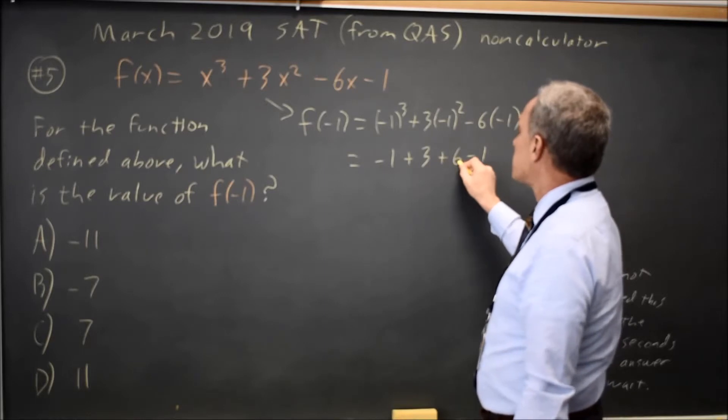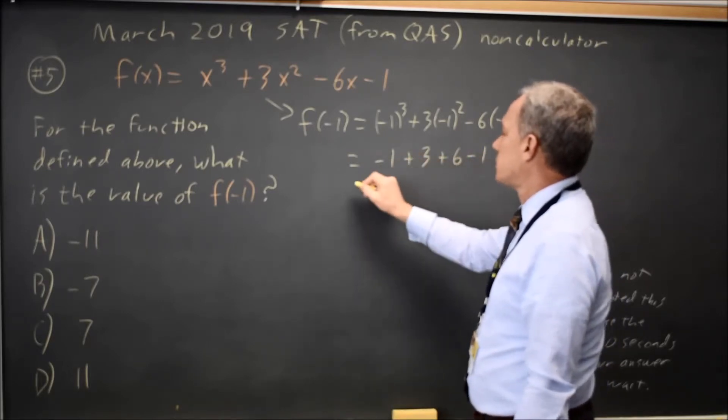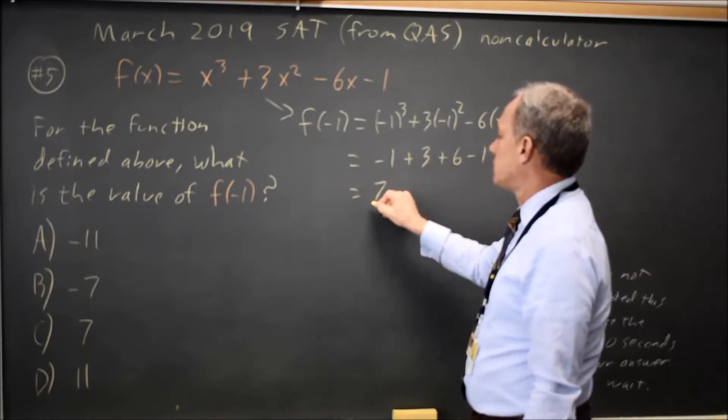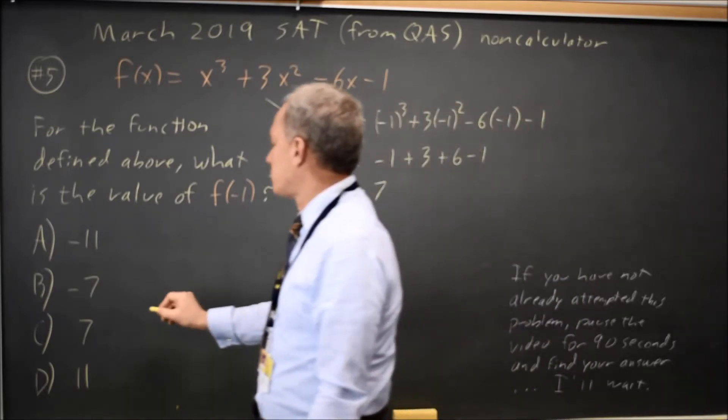So I have 6 plus 3 is 9, minus 1 minus 1 is 9 minus 2 is 7. So the correct answer here would be C.